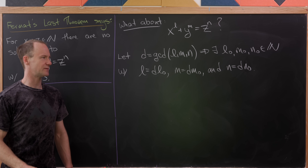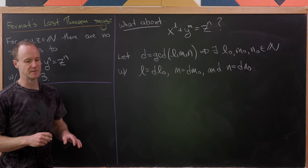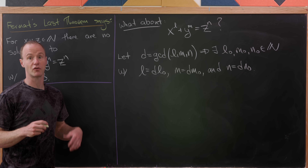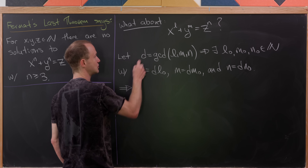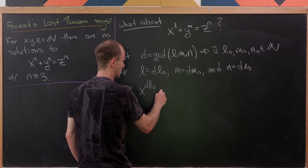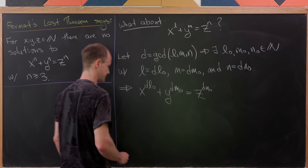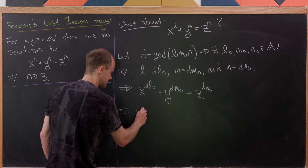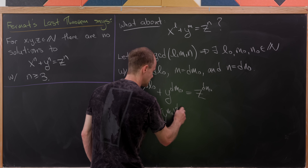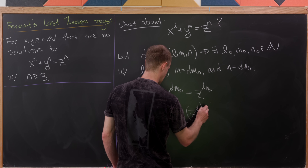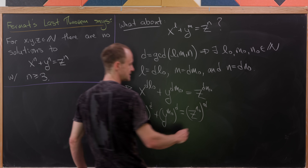That's exactly what it means to be a common divisor. The greatest common divisor is simply the biggest common divisor, and we're not actually going to use anything about the 'greatest' part just at this moment. Now let's plug these versions of l, m, and n into our equation to get x to the d times l0 plus y to the d times m0 equals z to the d times n0. We can write that as x to the l0 raised to the d power, plus y to the m0 raised to the d power, equals z to the n0 raised to the d power, simply by exponent rules.